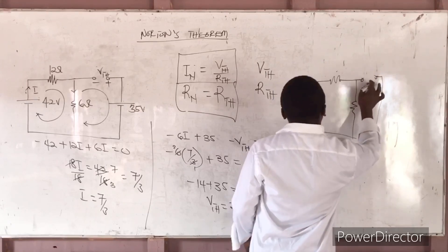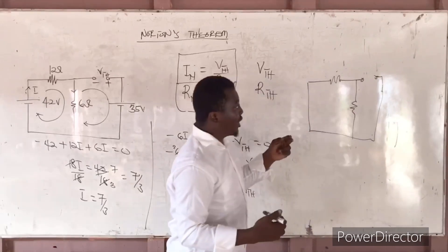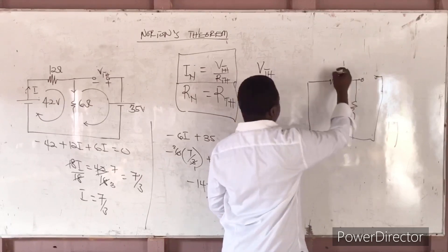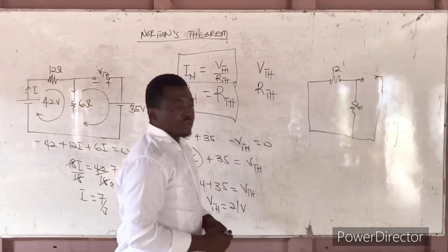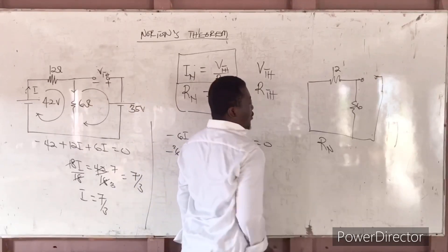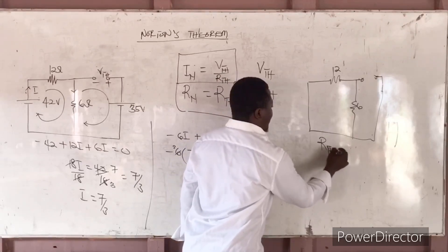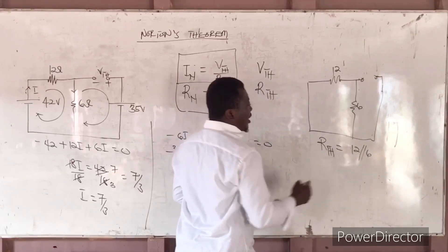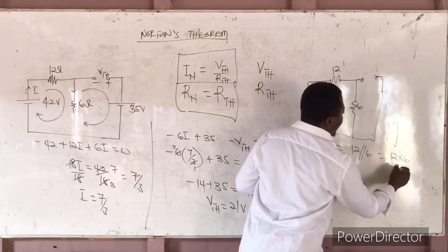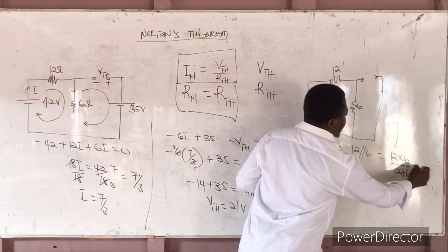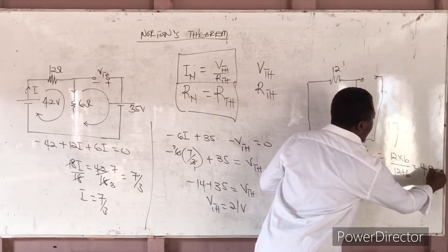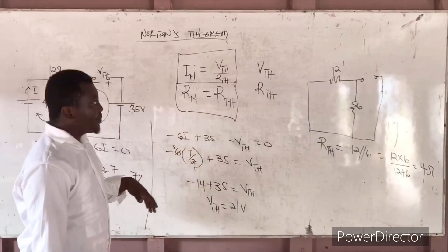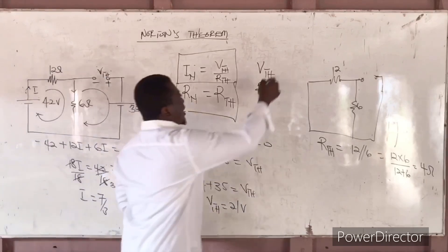So if you short the voltage source and you have this as an opening circuit to look into, you know if the current is going from that side, it means that 12 and 6 are in parallel. So our RN, which in other words we call RTH, will be equal to 12 in parallel with 6. And 12 in parallel with 6 is like 12 times 6 all over 12 plus 6. So you get 4 ohms. So if you have 4 ohms, how can you get IN?